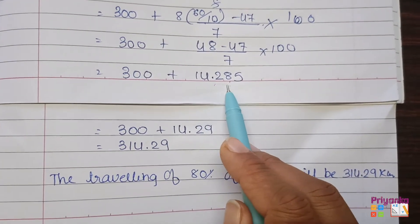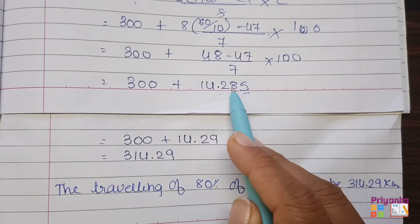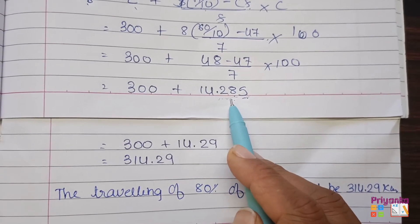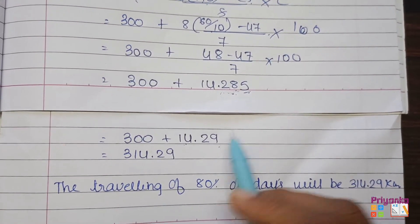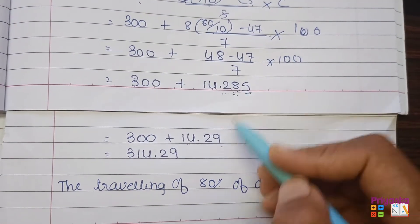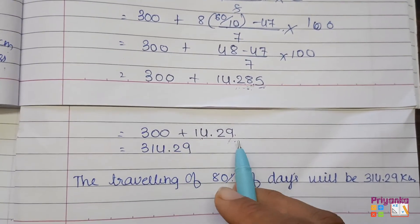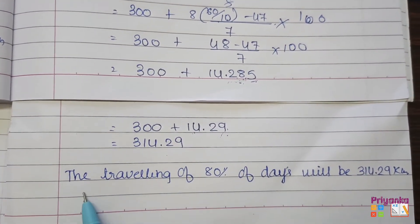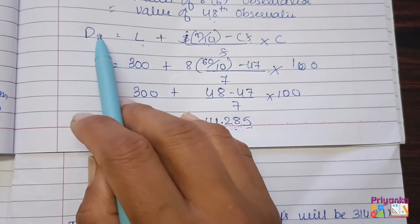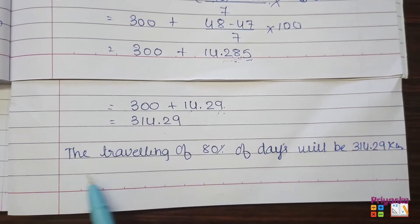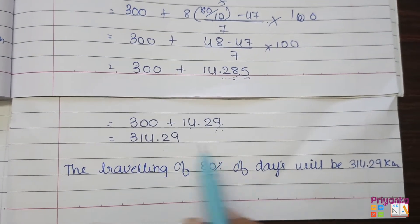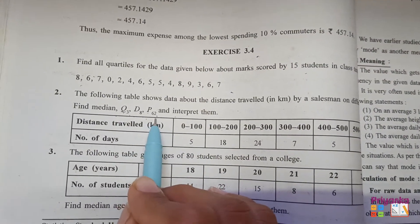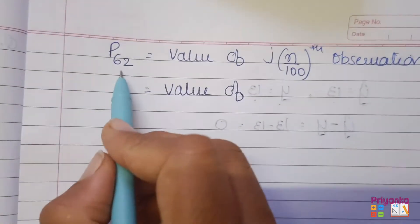Applying the formula: D8 = 300 + [(48 − 47) / 7] × 100 = 300 + [1/7] × 100 = 300 + 14.29 = 314.29. Since we are finding D8, the traveling distance of 80 percent of days will be 314.29 kilometers.